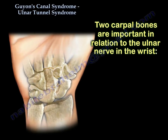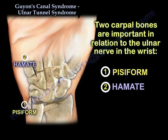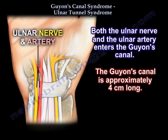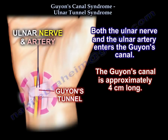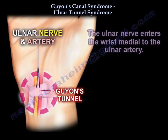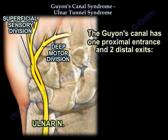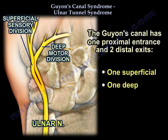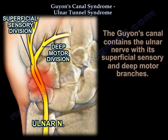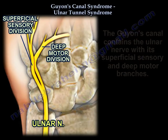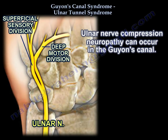Two carpal bones are important in relation to the ulnar nerve in the wrist: the pisiform and the hamate. Both the ulnar nerve and the ulnar artery enter Guyon's Canal, which is approximately 4 cm long. The ulnar nerve enters the wrist medial to the artery. Guyon's Canal has one proximal entrance and two distal exits — one superficial and one deep. The canal contains the ulnar nerve with its superficial sensory and deep motor branches, and ulnar nerve compression neuropathy occurs within it.